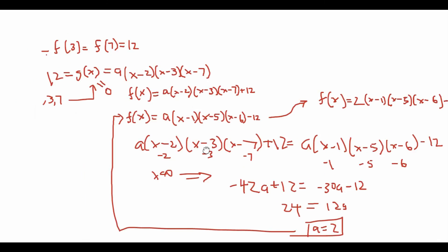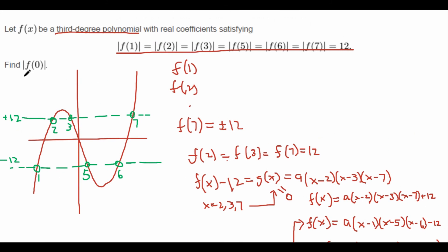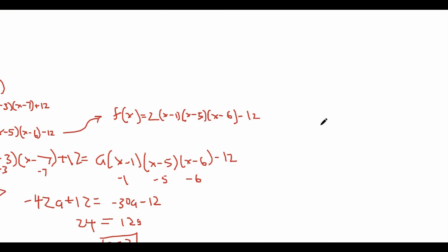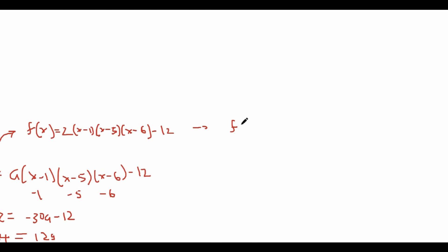And what are we trying to find here? We're trying to find f(0), the absolute value of it. So let's plug in f(0). And we get that f(0) = 2 × -1 × -5 × -6 - 12. 5 × 6 is 30 × -1 × 2 is -60 - 12 is equal to -72. So therefore, the absolute value of f(0) is simply 72. And we're done.